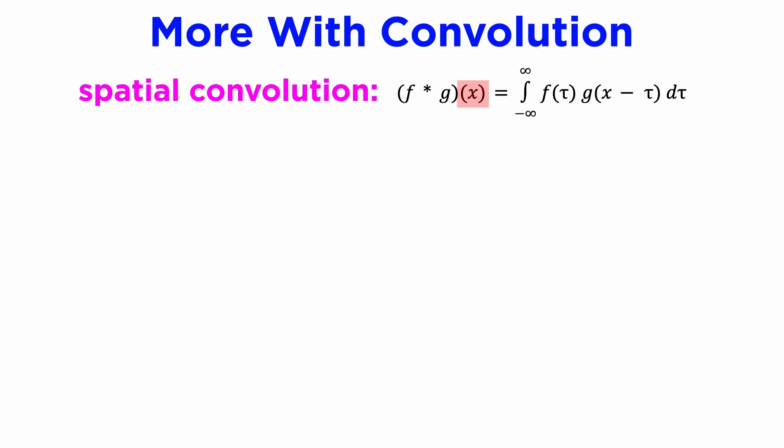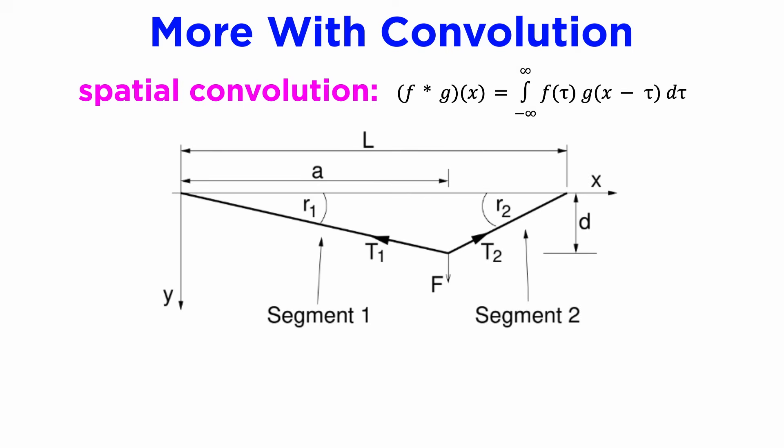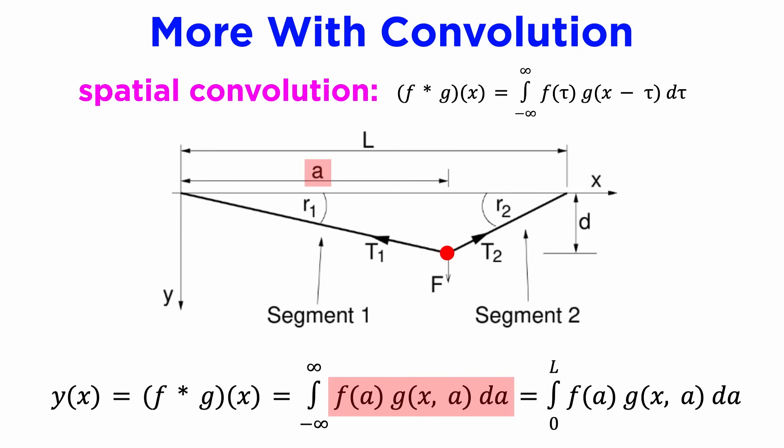This arises when the independent variable is a position variable x, and this new integral is termed the spatial convolution. For example, if we have a taut string pinned between two points, separated by a distance L, and we apply a distributed downward force f(x) to the string, we could use a spatial convolution to find the resulting shape of the deformed string. We just need to find the impulse response, which in this context would be the deformed shape resulting from a point load at a given point x equals a, noting that due to noncausality, g(x,a) is now a multivariable function. Once we've found g(x,a), which can be done by basic physics, we can compute the general forced response using the spatial convolution integral as shown, which would have been very difficult to do otherwise.